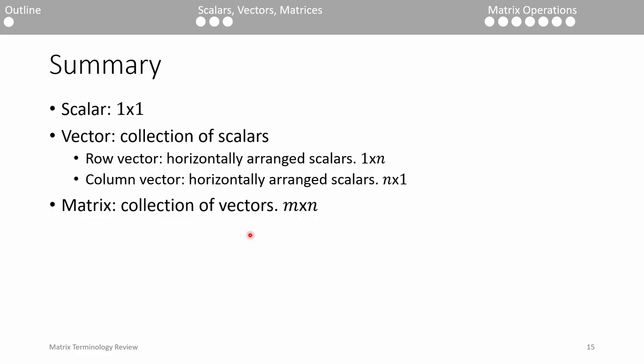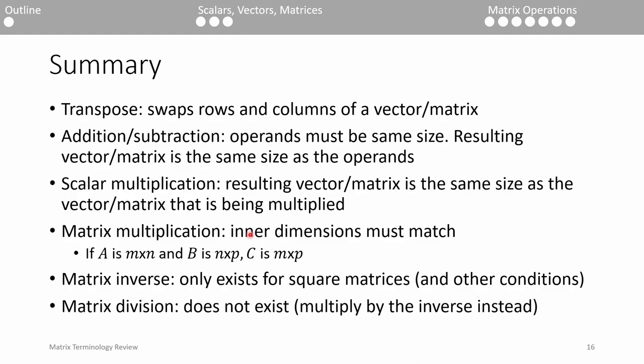To summarize, we reviewed the basic definitions of a scalar, vector, and matrix. A scalar is just a number and has size one by one. A vector either has one row or one column, and a matrix has multiple rows and multiple columns. When we transpose a matrix or vector, we swap its rows and columns. This also swaps its dimensions.